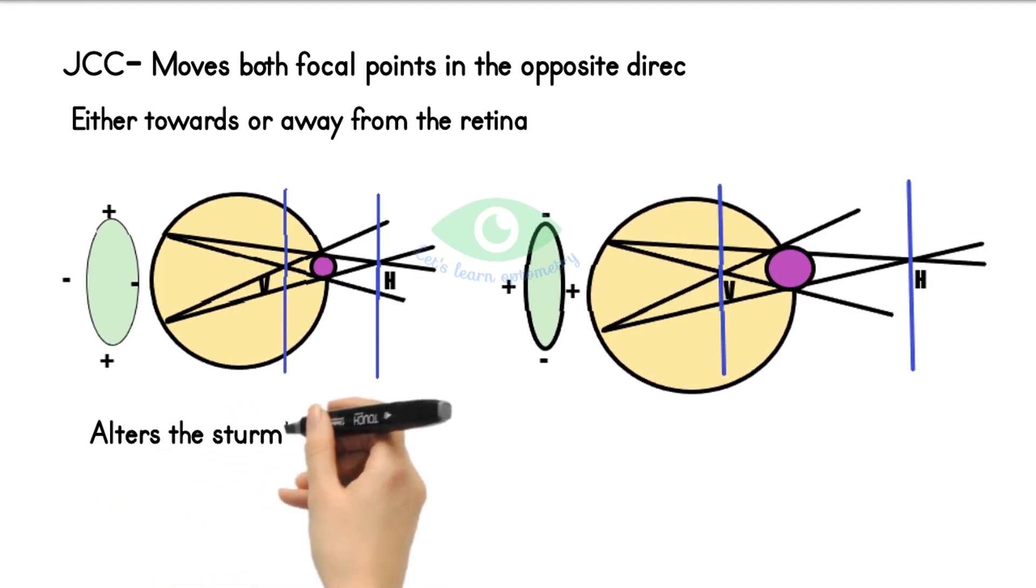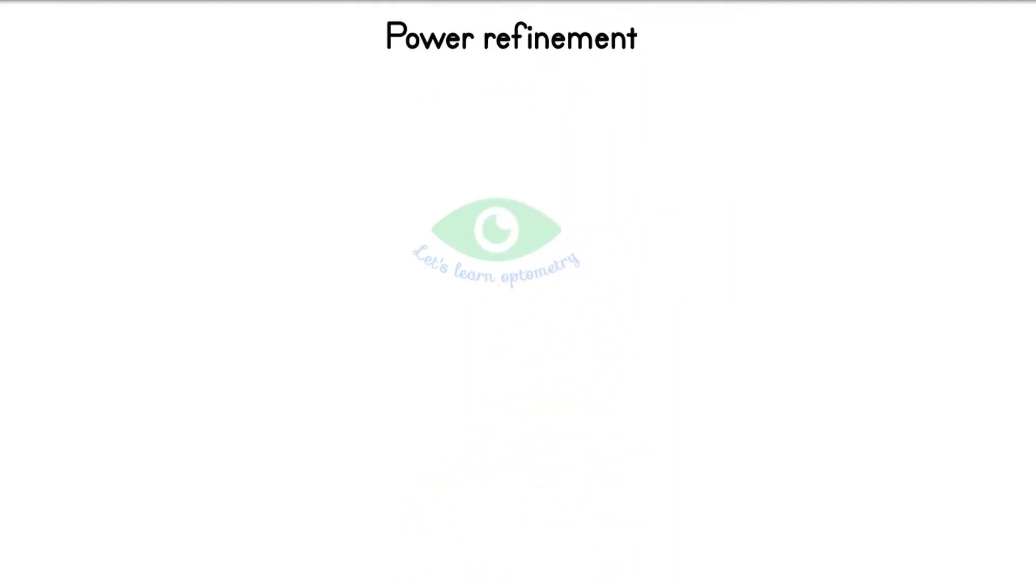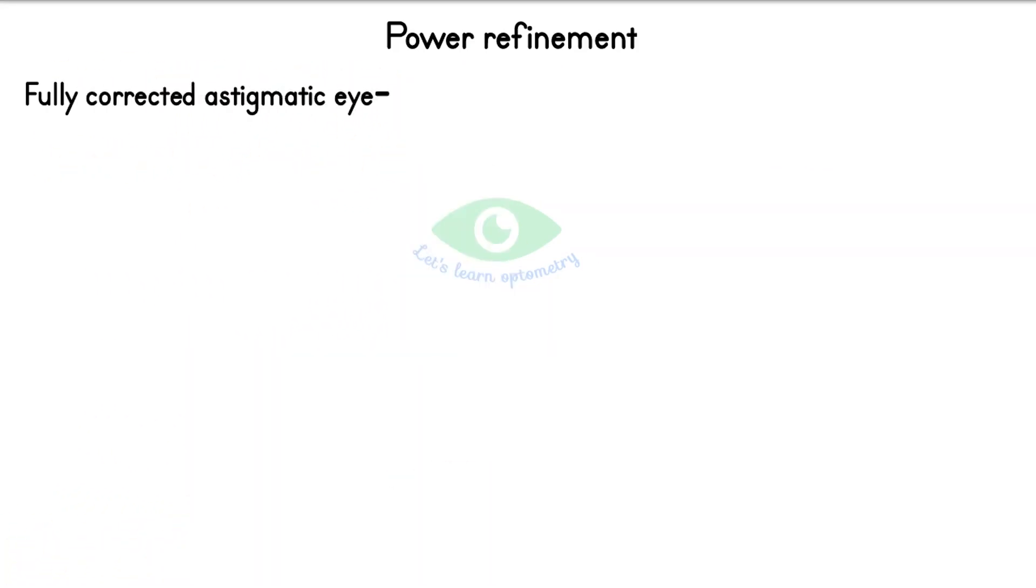Principle of power refinement: Although we do axis refinement first, it is easier to understand the concept of power refinement before axis refinement. Consider a fully corrected astigmatic eye.